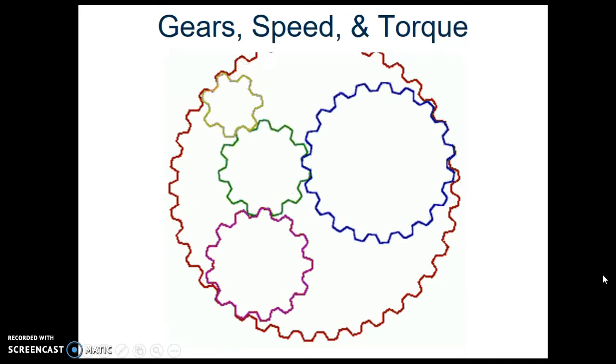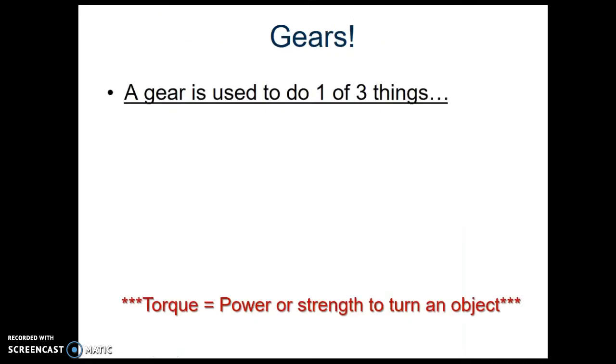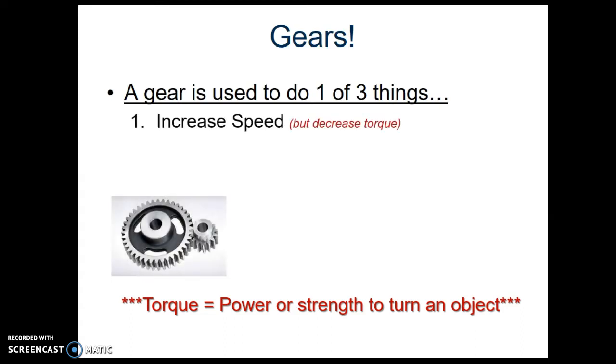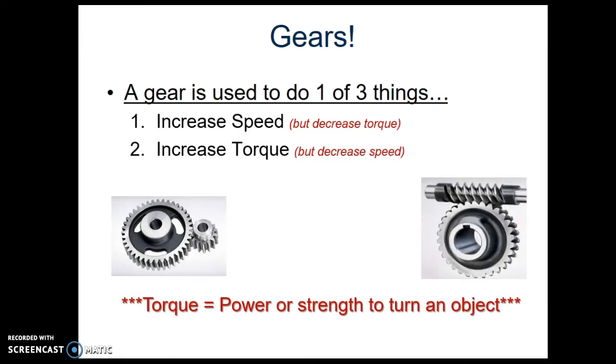And that kind of highlights one of the reasons we use gears. There's usually three reasons that we use gears in a mechanism. One of those reasons is that we increase the speed of movement from beginning to end of the mechanism. Sometimes we'll put gears together and we want to increase torque or the amount of power we have to do our work from the beginning to the end of the mechanism.